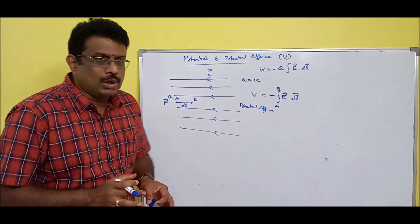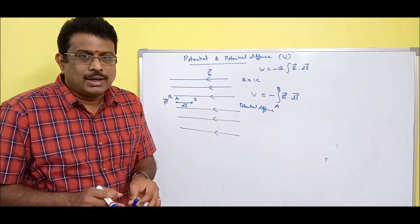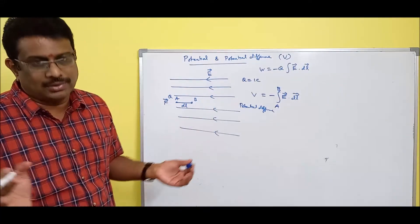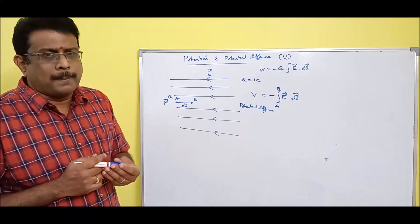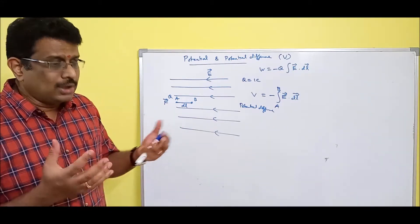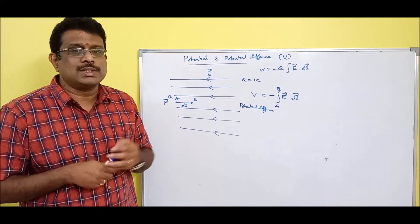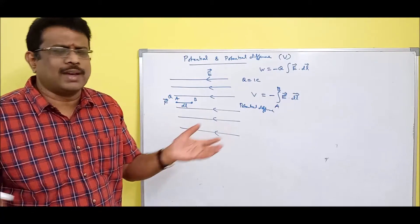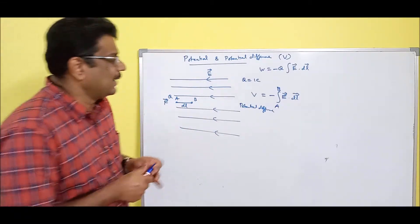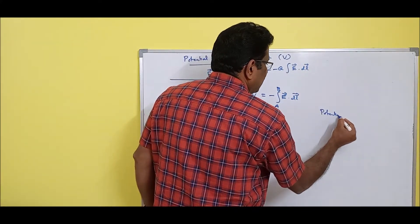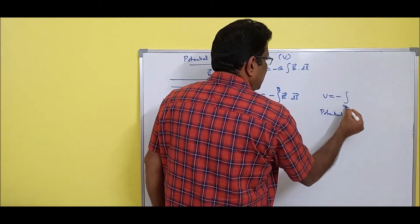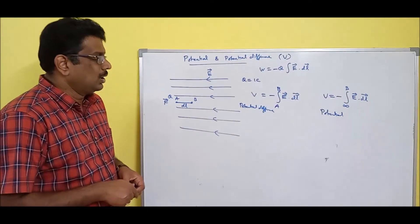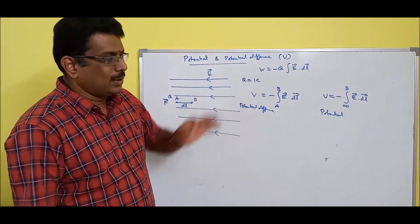When you move from zero potential to one location, that is called potential at a point. But zero potential doesn't really exist anywhere in the universe — the Earth has a magnetic field, the Sun has a magnetic field, the whole galaxy has a magnetic field. Everywhere you go there is a field, and where there is a field there is potential. So we define zero potential to be at infinity. Therefore, potential is: V equals minus integral from infinity to point b of E dot dl.